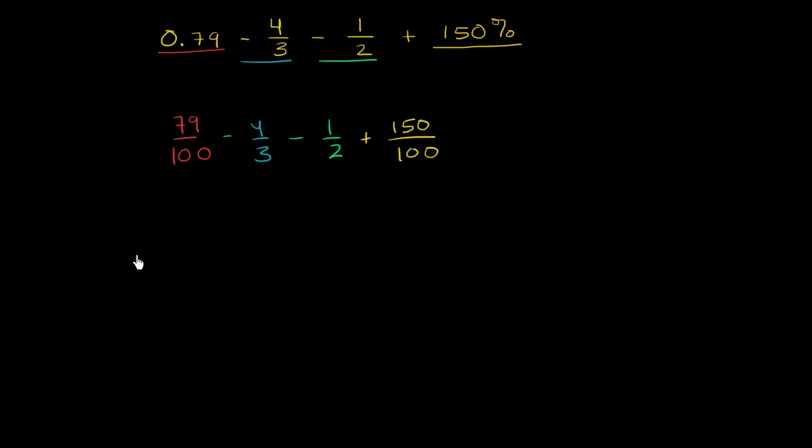So let me do this in this reddish color. So 79 over 100 is the same thing. If I were to write it over 300, to go from 100 to 300 in the denominator, I'm multiplying by 3. So I have to multiply the numerator by 3 as well. So I'm going to multiply by 3 as well. Let's see, 80 times 3 would be 240. So it's going to be 3 less than that. So 240 minus 3 is 237.